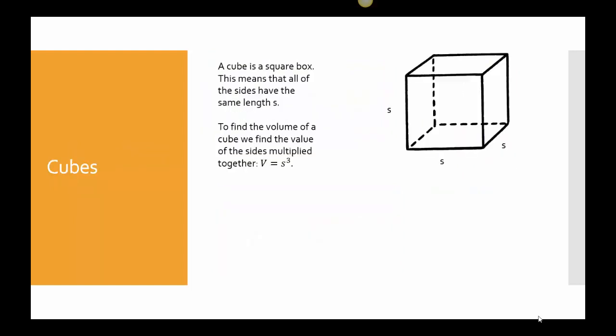Let's start with a cube. A cube is a square box. That means all of the sides have the same length s. To find the volume of the cube, we find the value of the side multiplied together, which means side, side, side, so length, width, and height. Our volume could be expressed as the side cubed, or if you want to do length width height, that works too.